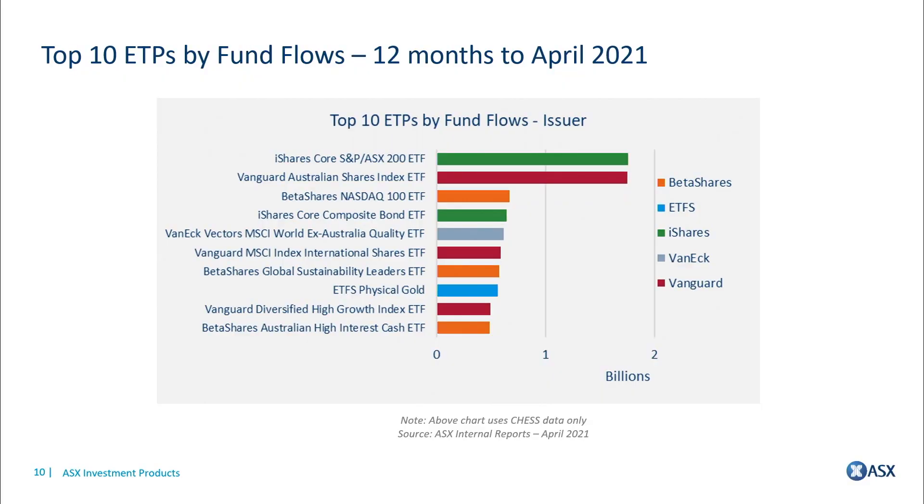This chart shows the top 10 ETPs by fund flows for the last 12 months. It's no surprise to see iShares and Vanguard Australian ETFs featuring in spots one and two. Some really interesting themes to pull out include global equities — the BetaShares Nasdaq 100 fund features in third spot, and the BetaShares Global Sustainability Leaders ETF also features in the top 10. We'll be having a session about sustainability and ESG later today.